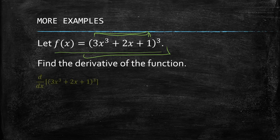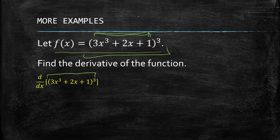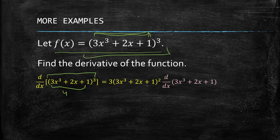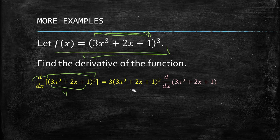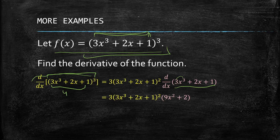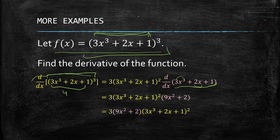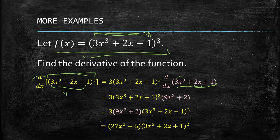Getting the derivative, we first get the derivative of the outer function, which is the cube. Let u = 3x³ + 2x + 1. We bring the 3 down and subtract 1 from the exponent, then multiply by the derivative of the inner function. The derivative of the inner function: 3 times 3 gives us 9, so we get 9x², and the derivative of 2x is 2, and the derivative of 1 is 0. So the inner derivative is 9x² + 2. Distributing the 3, we get 27x² + 6.